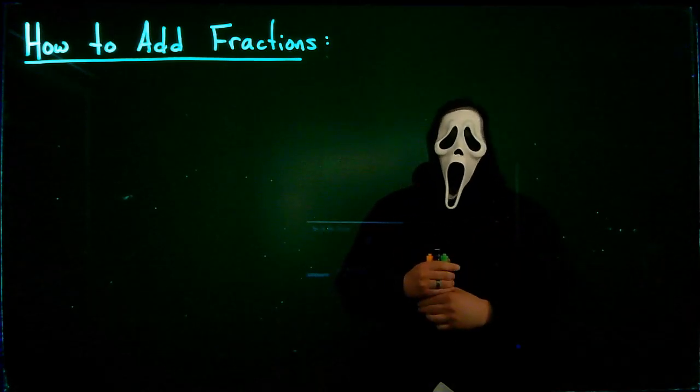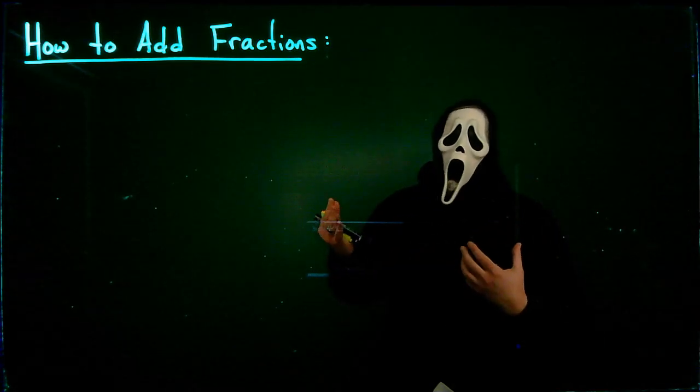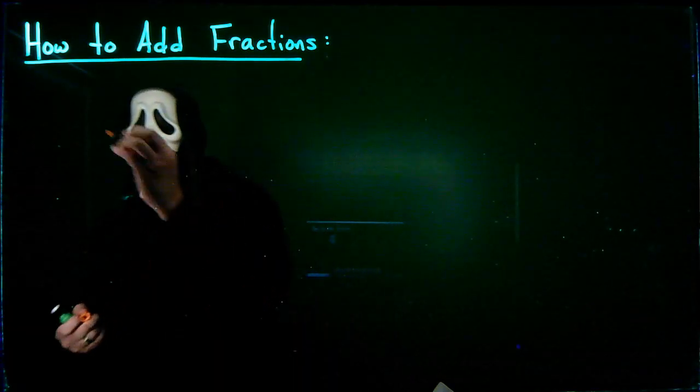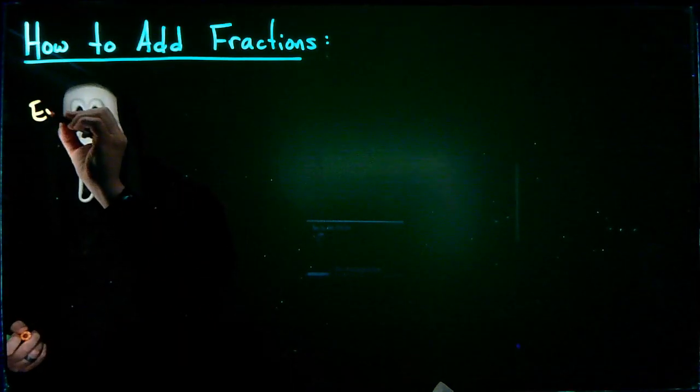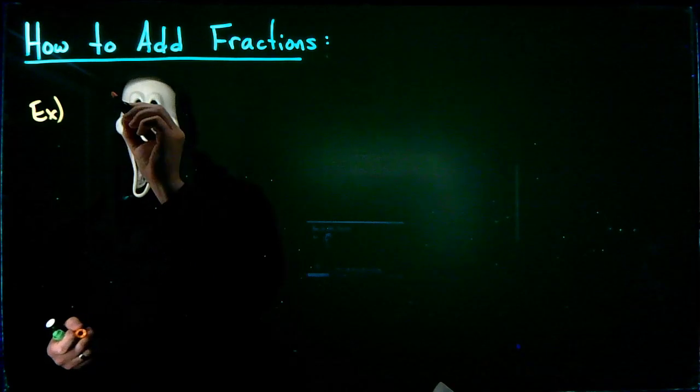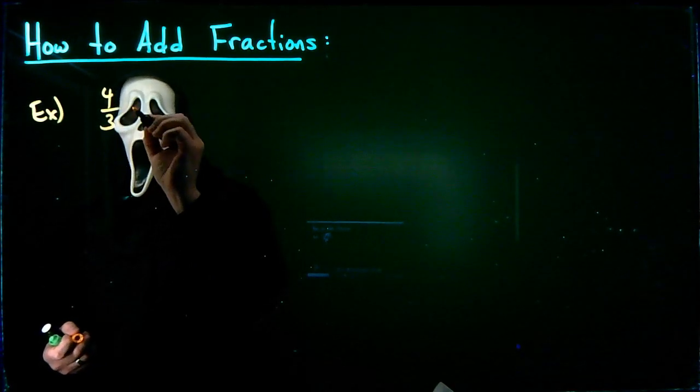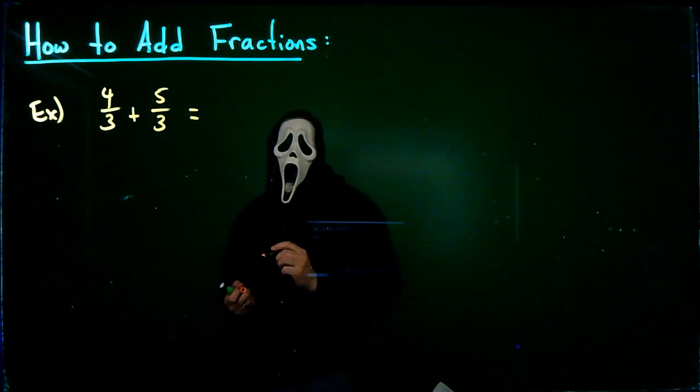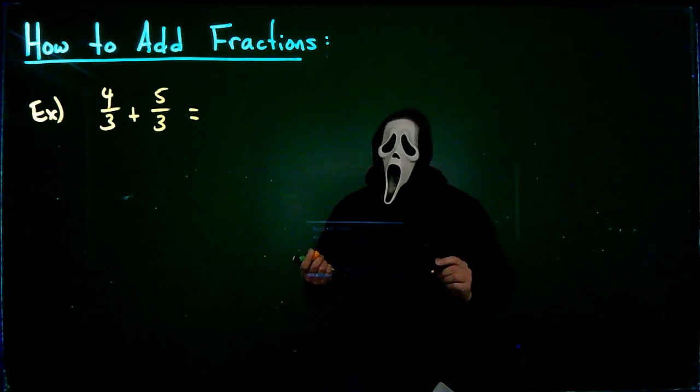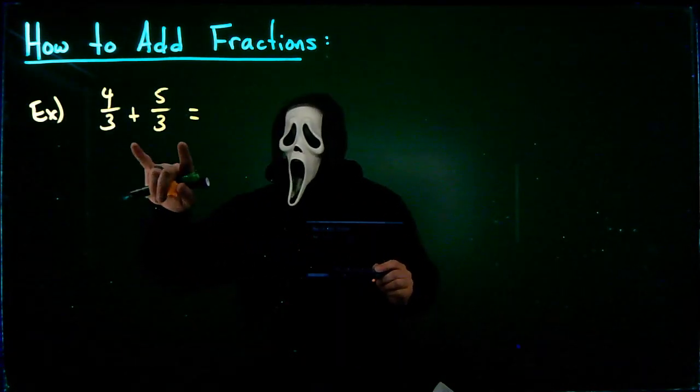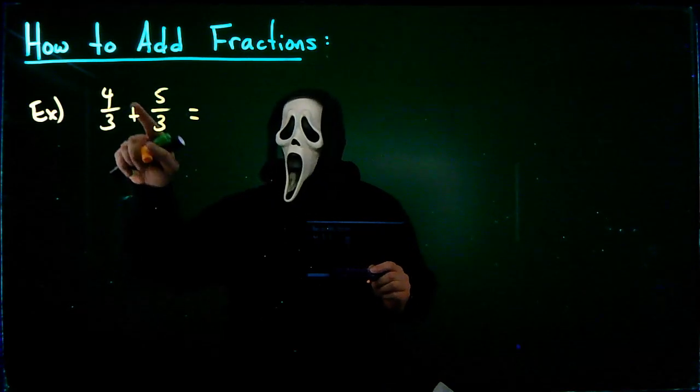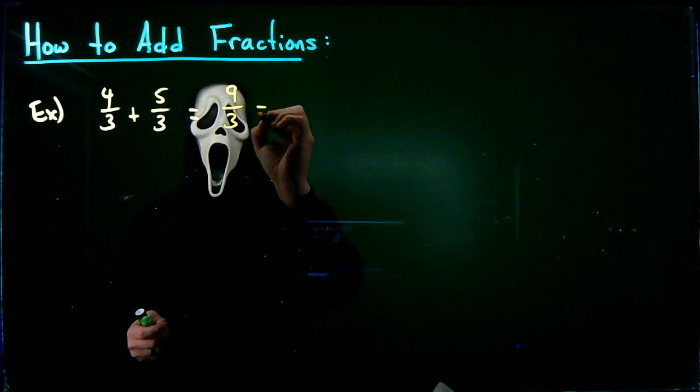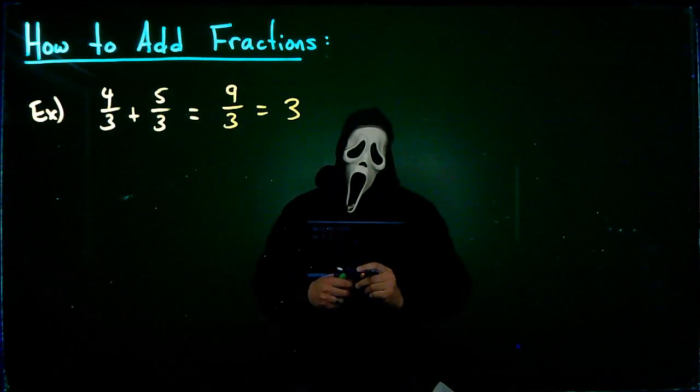With all those pieces in place, we can now come to the main point of the video, which is how to add fractions. Now, first and foremost, if I give you something like 4 thirds plus 5 thirds, we can add these as is. Because when I add fractions, as long as the denominators match, we add the numerators, which would give me 9 thirds, which reduces to 3.